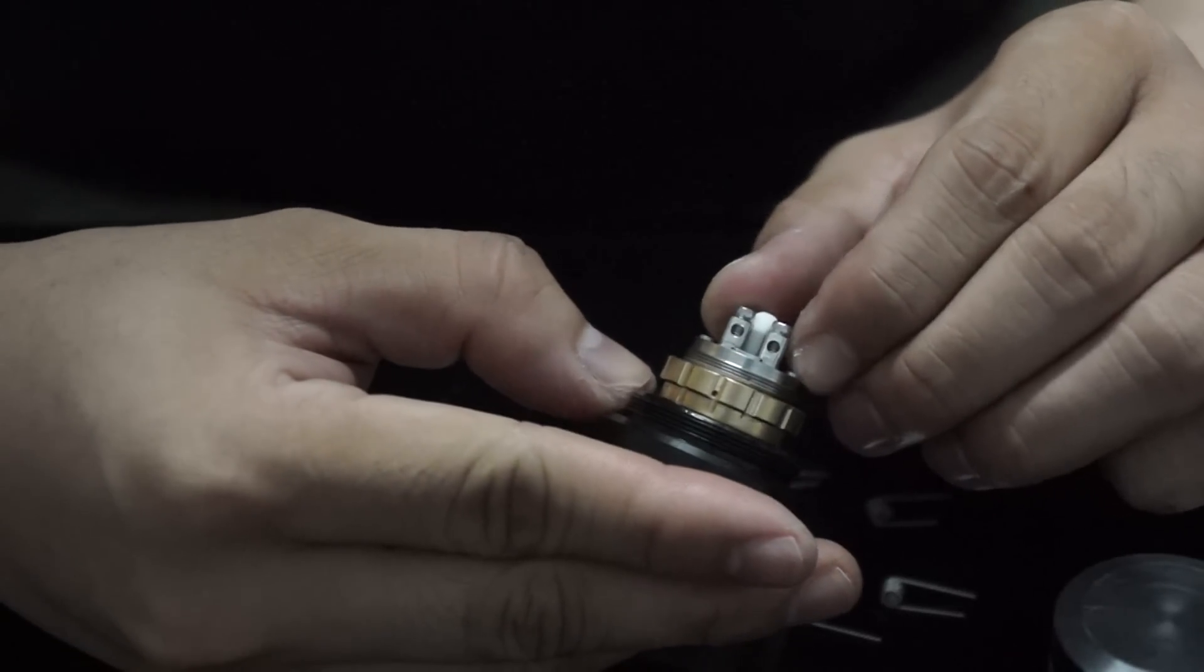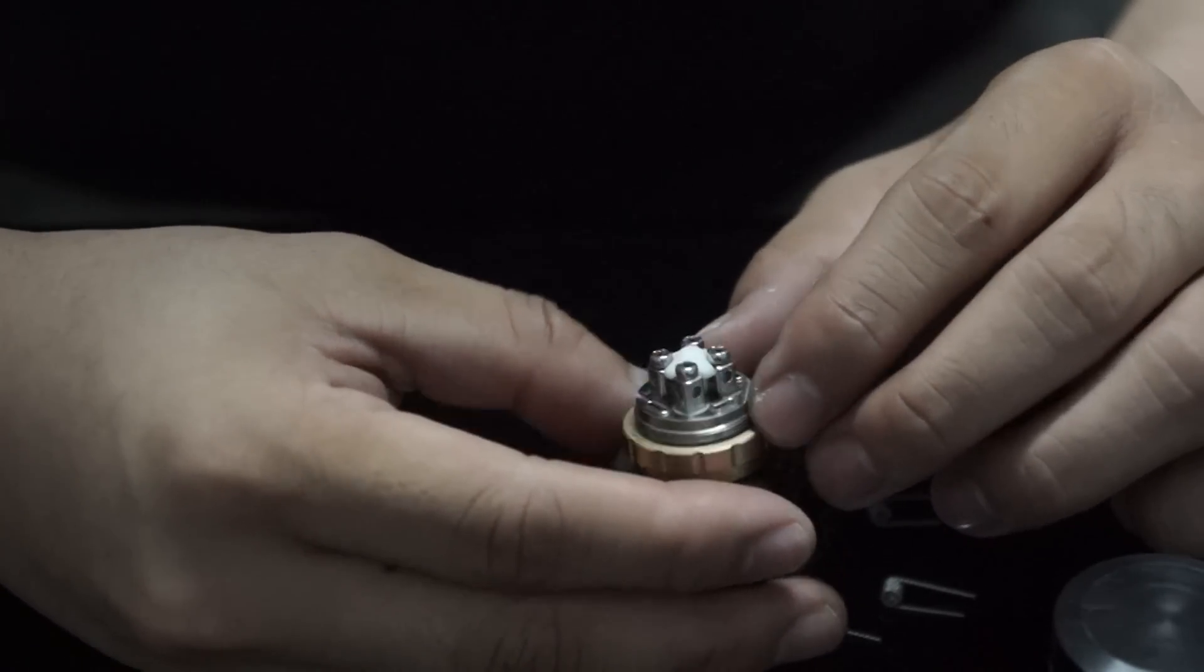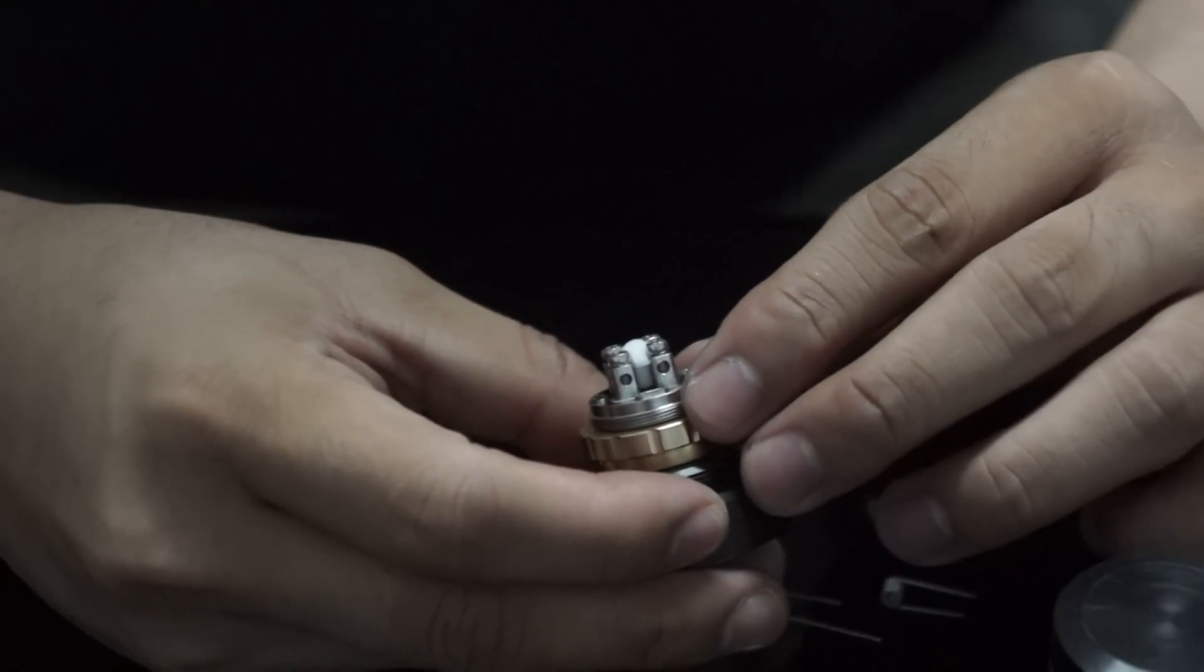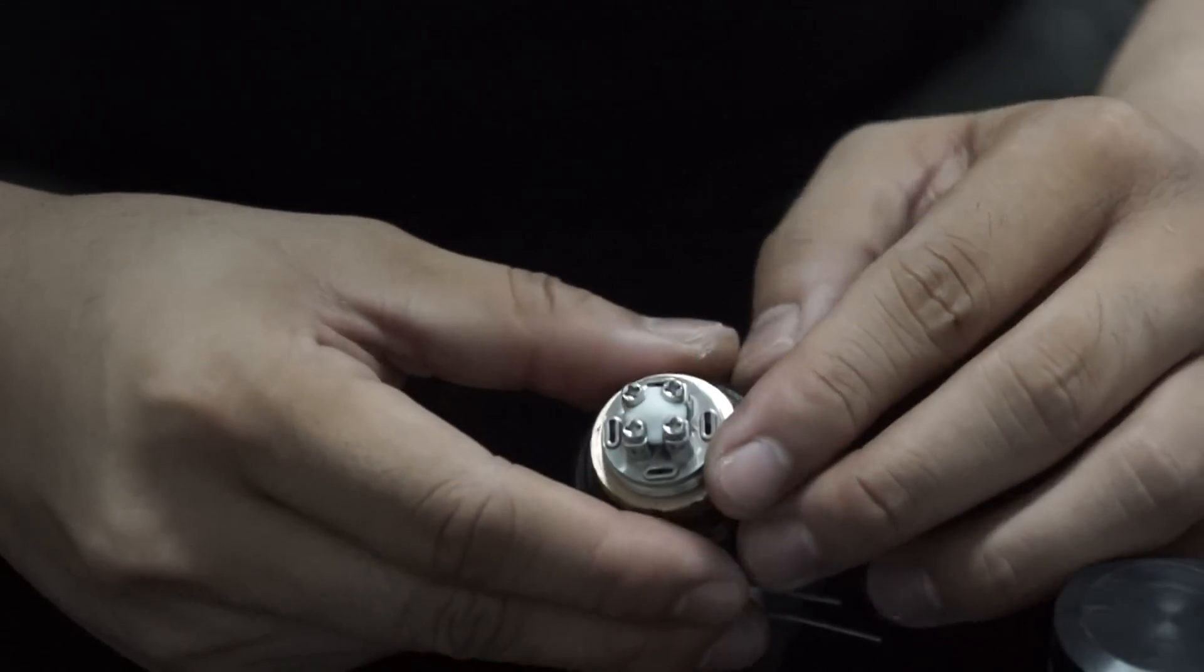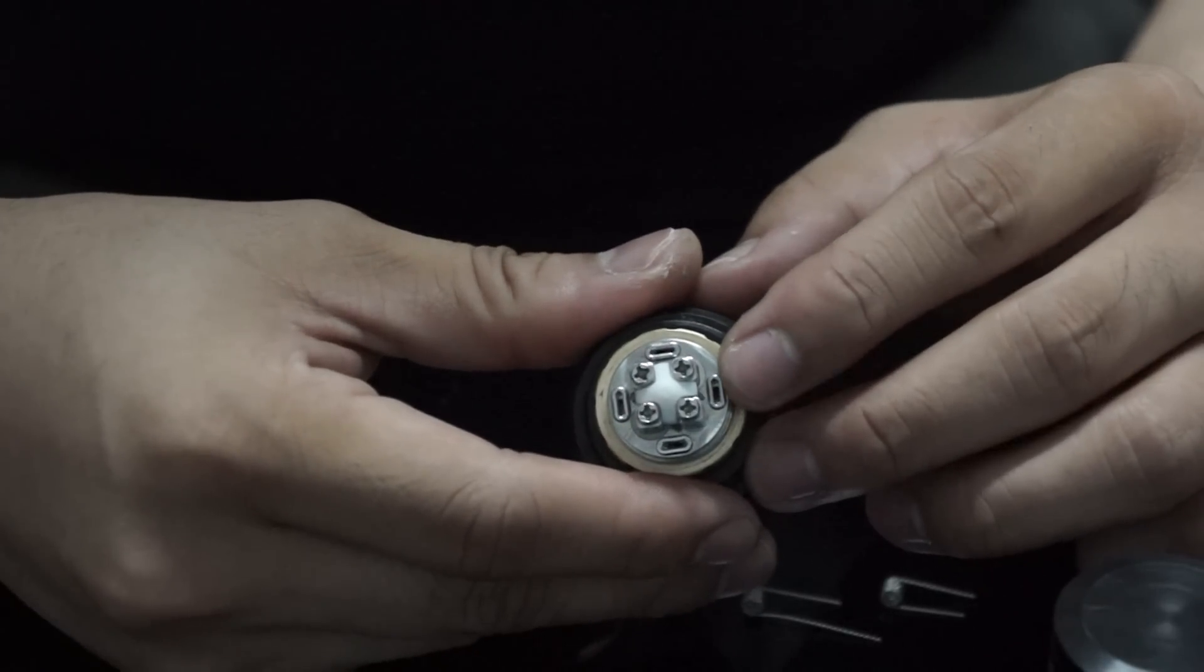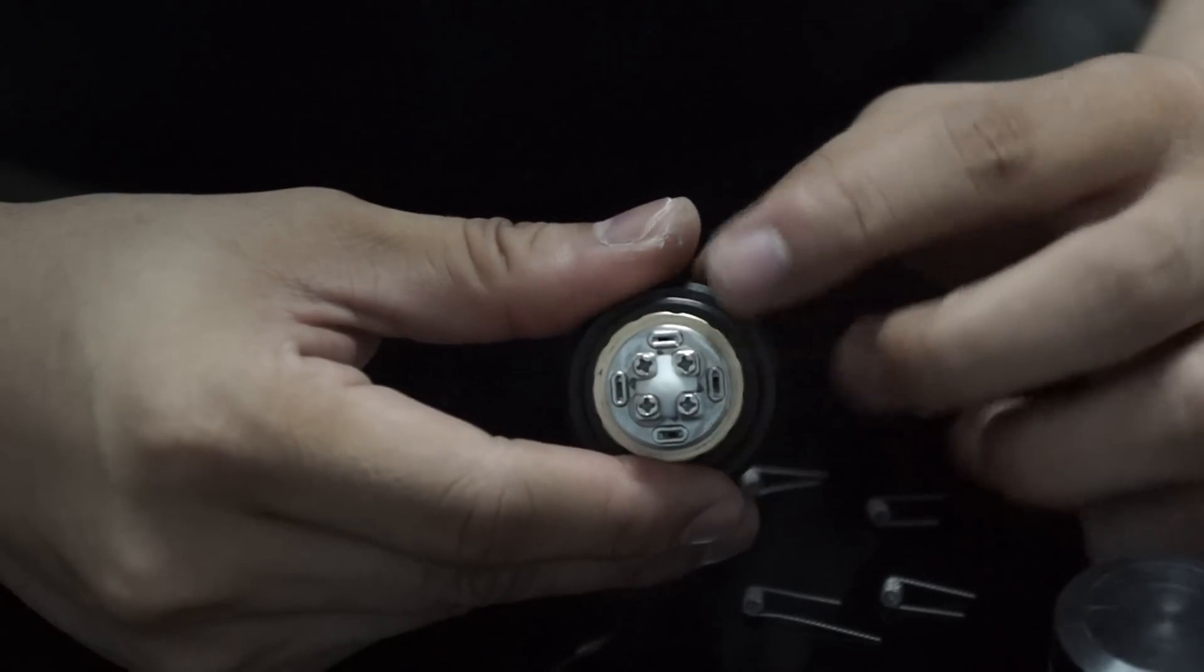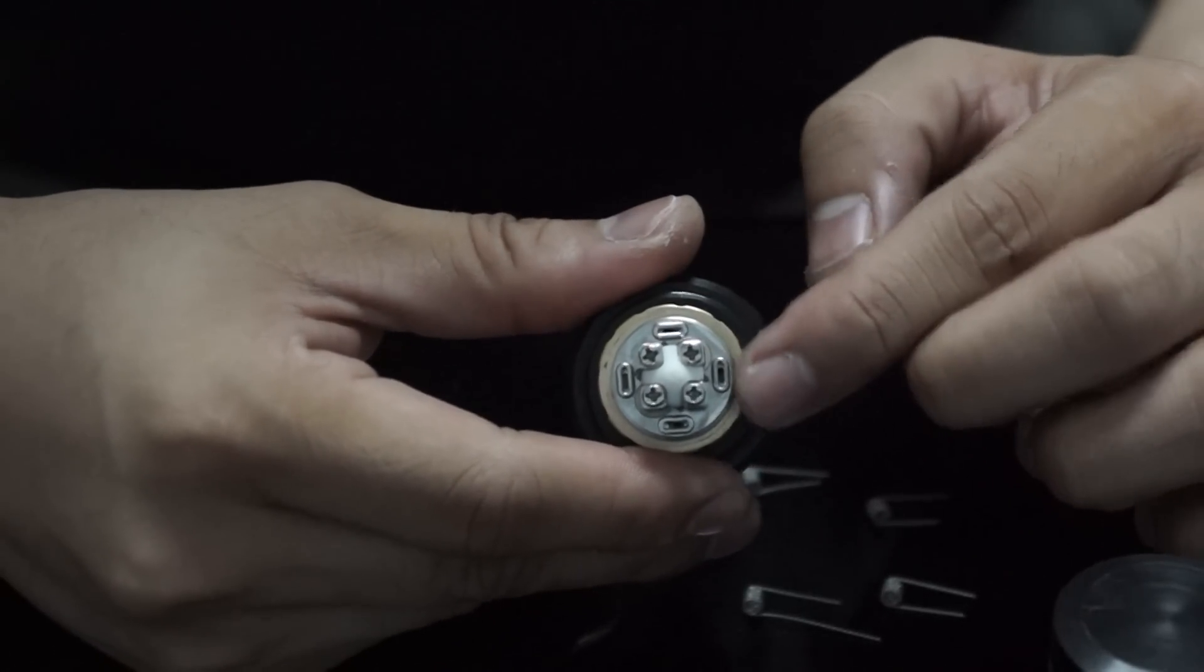Right there. That means that three air holes are open. And if there's no build on it, you can actually see which air holes are open. In this case, there are air holes here, here, and here.